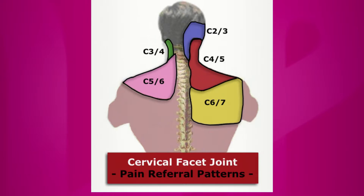Followed by C6/C7, which is basically in the shoulder blade area — that's the second most common source of neck problems. And the most common source of headaches and upper neck pain will be the C2/C3 area, which is on the back of the head. These are what we call the referral map. When we're seeing someone in the clinic complaining of pain in a specific area, we have a better idea of which levels we're dealing with, and that's when we decide which joints to look at on an MRI or CT scan and then address therapy.